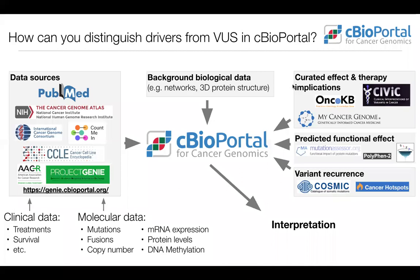We've added annotation sources into cBioPortal to make driver vs. passenger interpretation easier, divided into three groups. First, curated data about specific known mutations — we use three sources: OncoKB (maintained by Memorial Sloan Kettering), CIVIC (Washington University in St. Louis), and My Cancer Genome (Vanderbilt University). These tell you whether a mutation is a driver or likely driver. We also have predicted functional effects from Mutation Assessor, PolyPhen, and SIFT. And sometimes the most powerful signal is recurrence — we rely on COSMIC and Cancer Hotspots (cancerhotspots.org) for information about recurrence at the amino acid level.